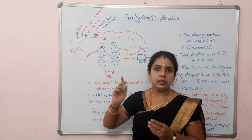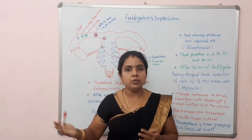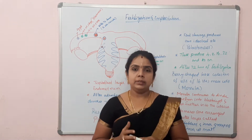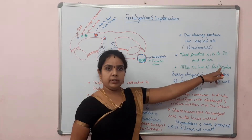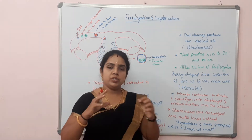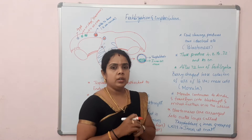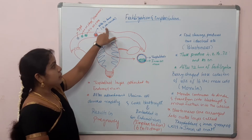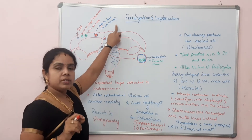Then two cells divide into four cells, four cells into eight, eight into sixteen, sixteen into thirty-two, and so on. After 72 hours of fertilization, there will be a structure called morula. This is a berry-shaped, loose collection of cells — approximately 8 to 16 cells — and this stage is called morula.